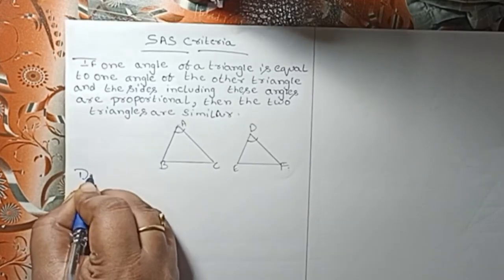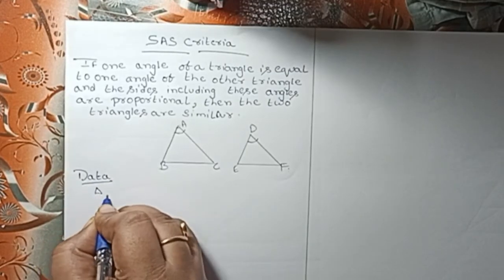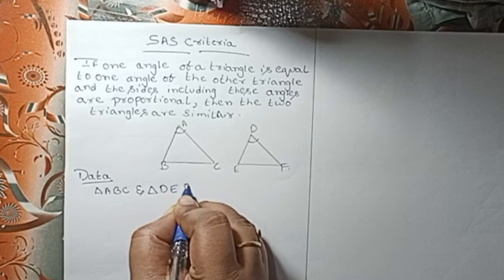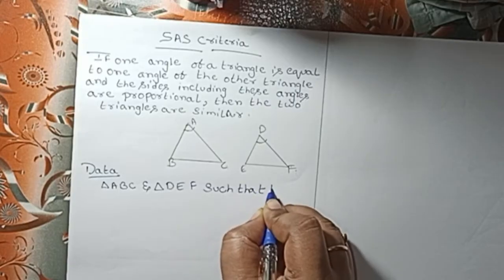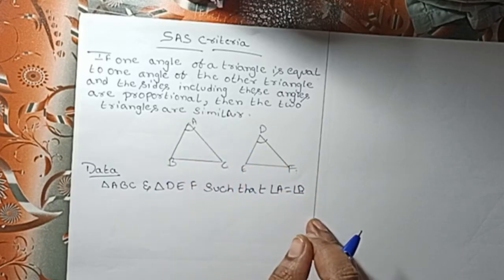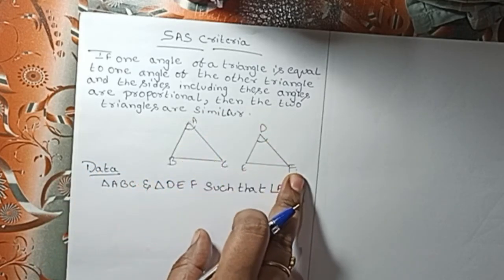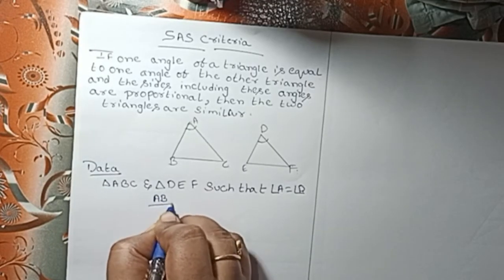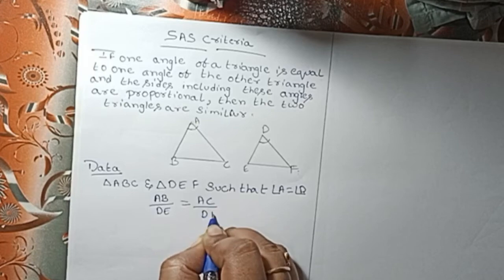Angle A is equal to angle D. The condition is that AB divided by DE is equal to AC divided by DF — that is, the sides including the equal angles are proportional.